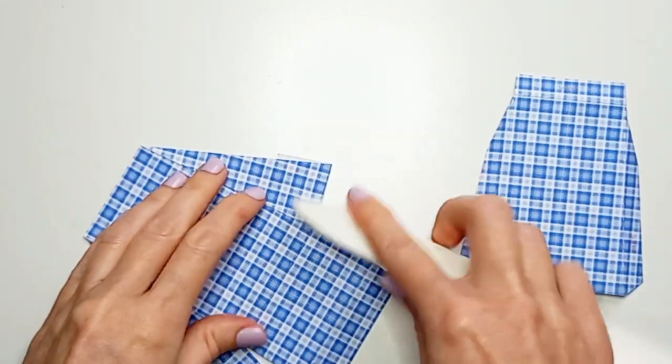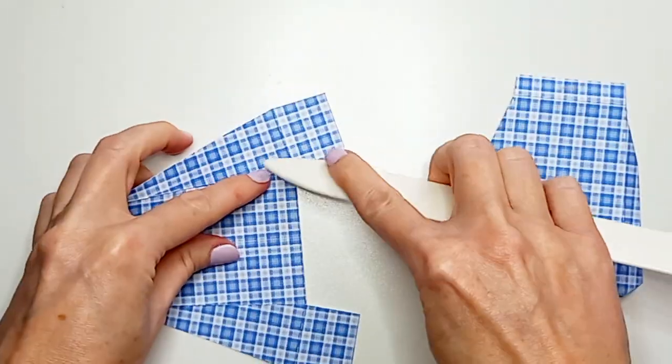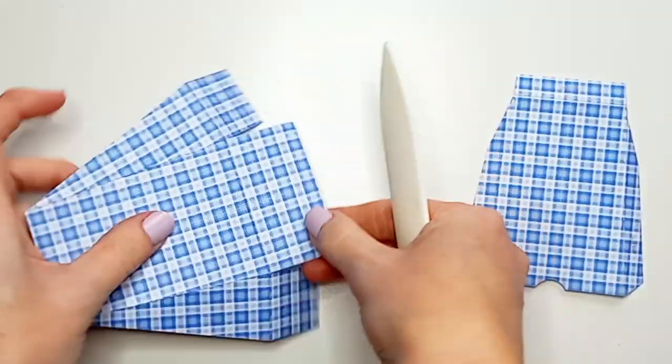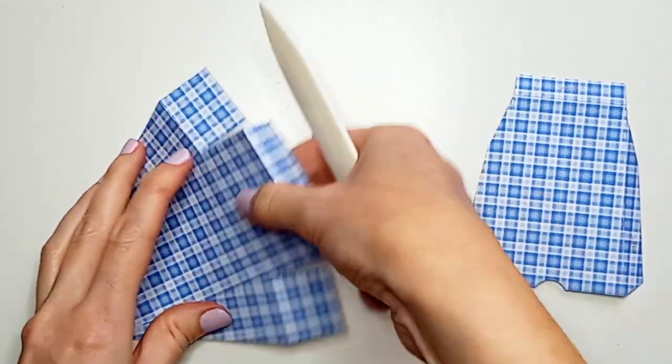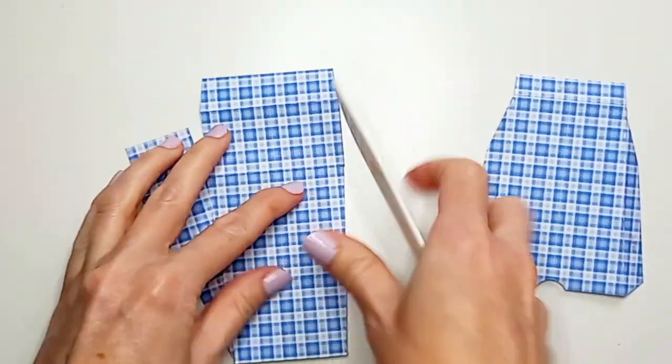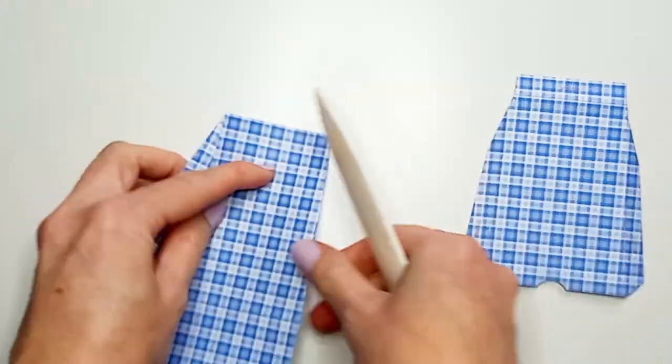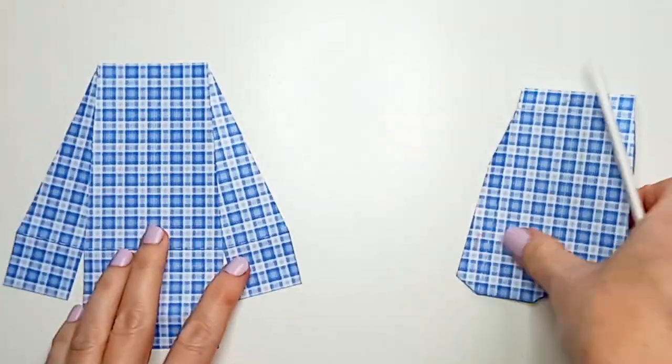Now I've printed mine onto photo quality paper which is 220 GSM or you can just use plain white cardstock. So I'm just going around making sure that all of these score lines are burnished.